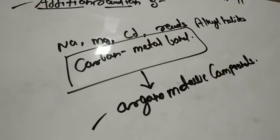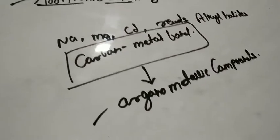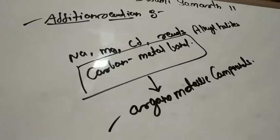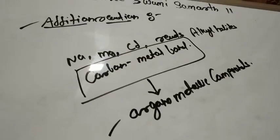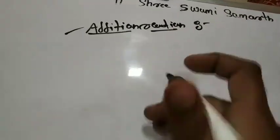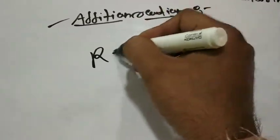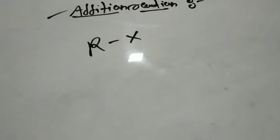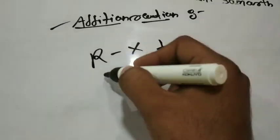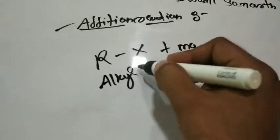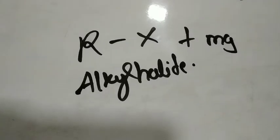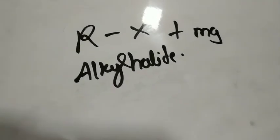Many a time, reactions are being asked on the organometallic compounds. Now let's quickly see how these organometallic compounds are formed. I will give you a general reaction: RX reacts with magnesium. RX is nothing but the alkyl halide — R is the alkyl group, X is the halide group, plus magnesium.